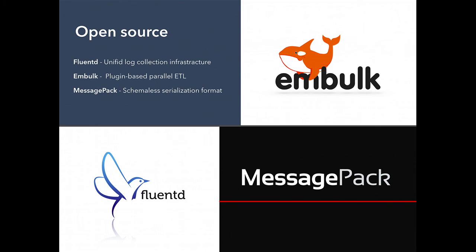Fluentd collects logs from applications, files, or other servers, and also has output plugins. Embulk is similar to Fluentd in terms of architecture but more batch-oriented. So if you have hundreds of gigabytes of CSV files on Amazon S3, you run Embulk to load them in parallel and dump everything into PostgreSQL, Oracle, Salesforce, using plugins.